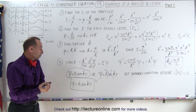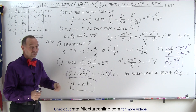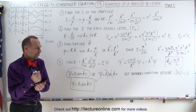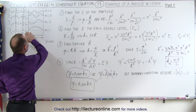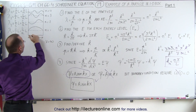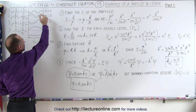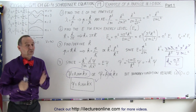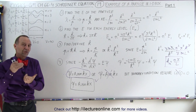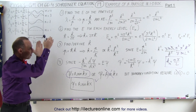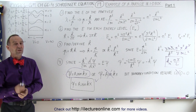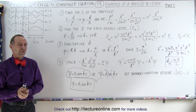The next thing we need to do is find the value of A using normalization. Then we can find the probability function that describes where we can expect to find the particle in a one-dimensional box, depending on what energy level the particle is at. Hopefully, this clarifies how to use the Schrödinger equation with a specific set of steps to arrive at a wave equation and probability function for a particle in a one-dimensional box.